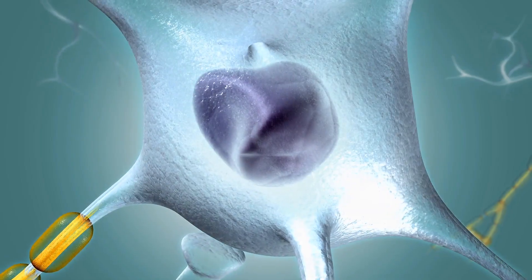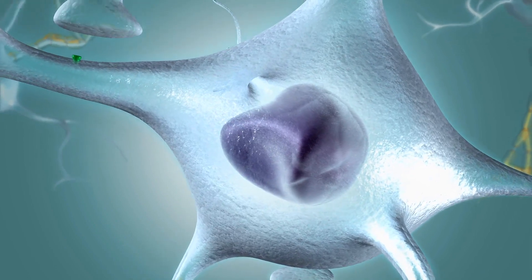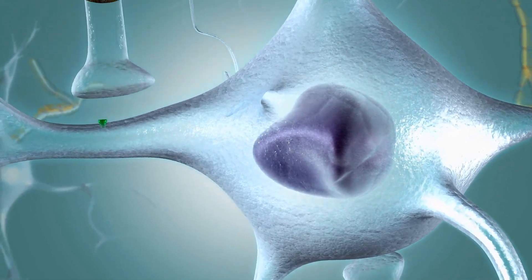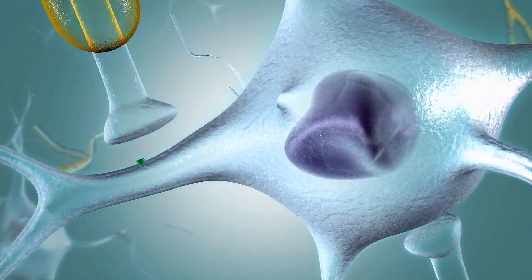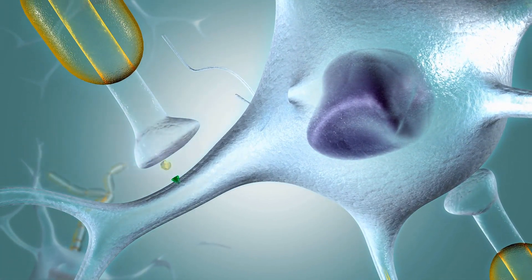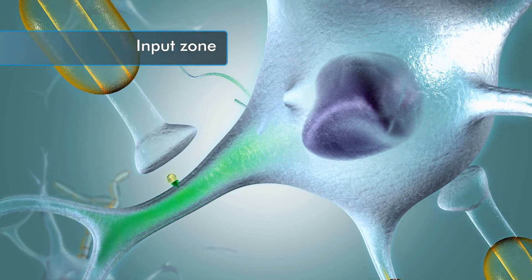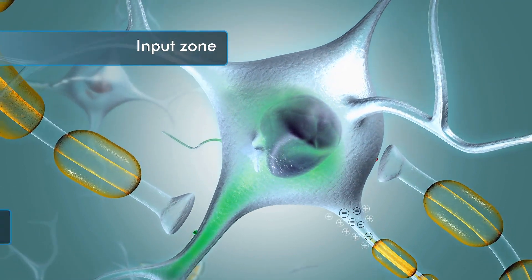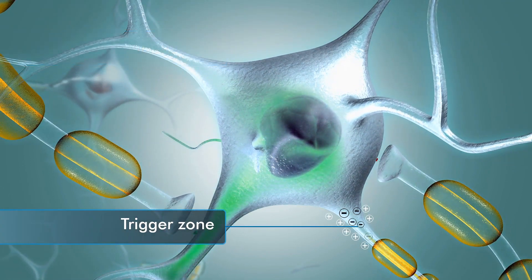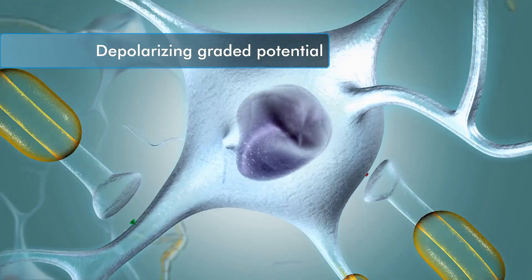It is the net voltage produced by graded potentials at the trigger zone that determines if the threshold of voltage-gated channels is reached to trigger an action potential. Some graded potentials occur when chemically-gated sodium channels open to allow sodium ions to diffuse into the input zone, electrically moving the trigger zone closer to or above the threshold. These are considered to be depolarizing graded potentials.